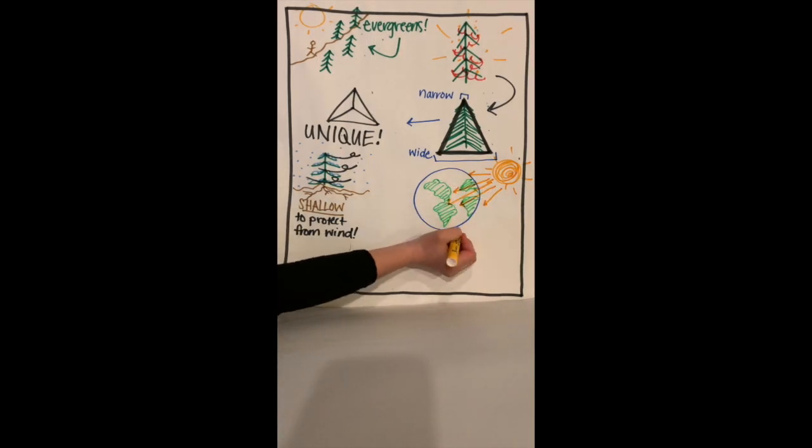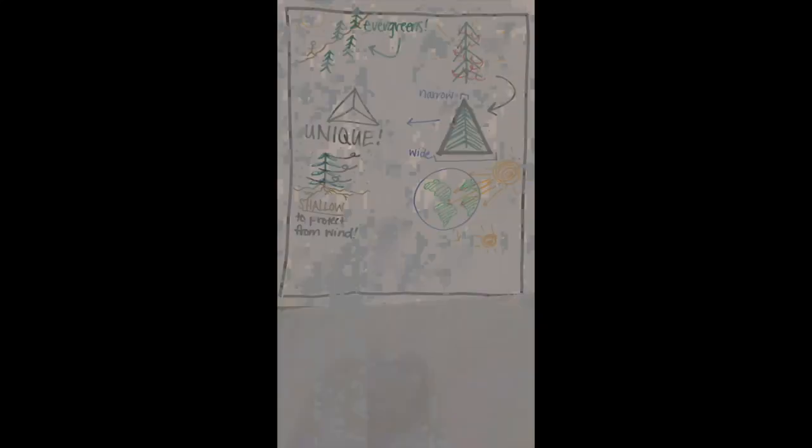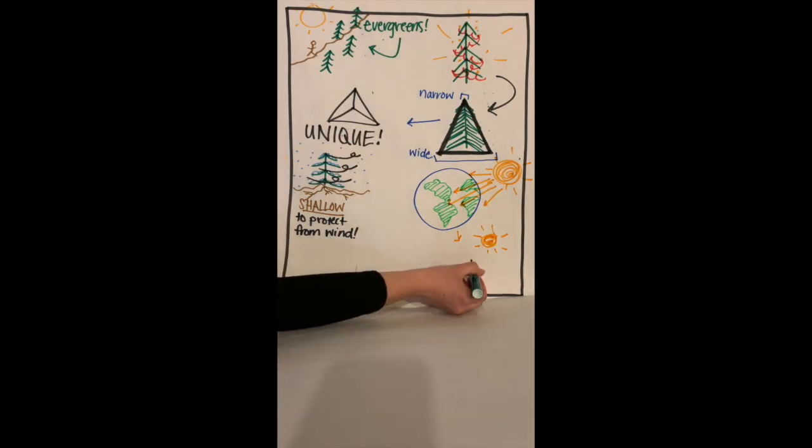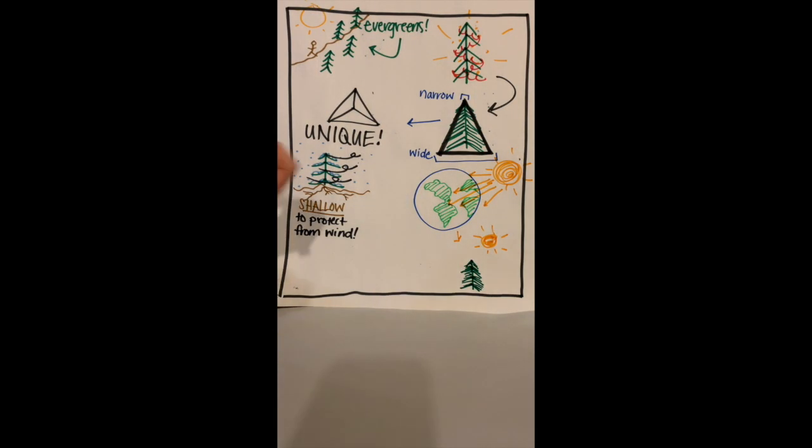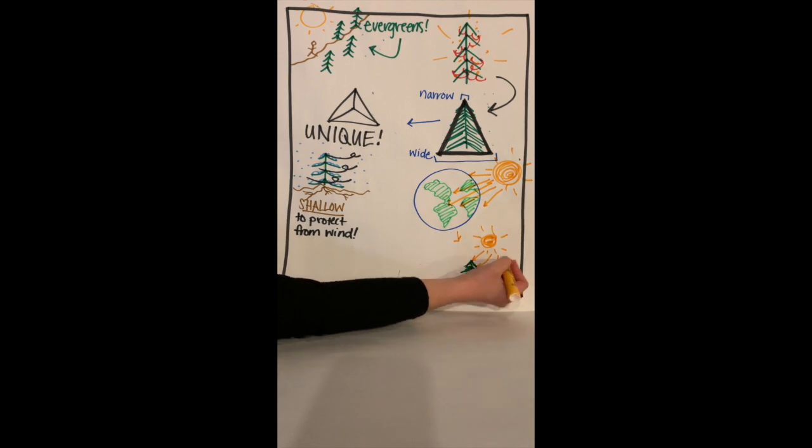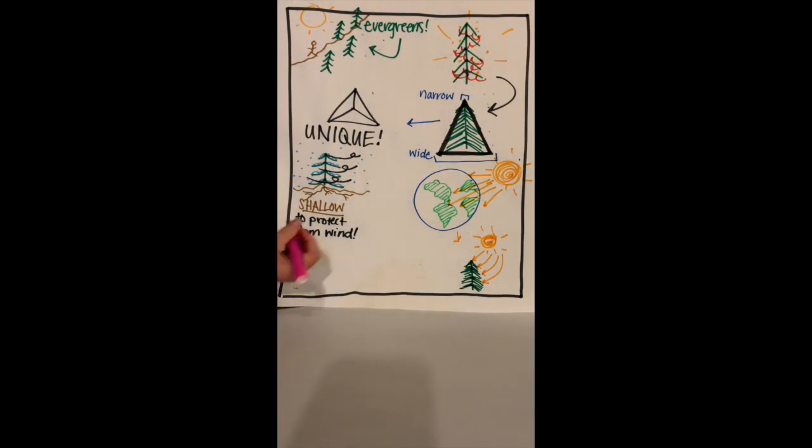The farther north you travel from the equator, the lower the angle is at which the sun's rays reach Earth. Evergreens rely on sunlight year-round to fuel photosynthesis. Their pyramidal shape allows all their branches to receive more sunlight, since the upper branches don't shade the bottom branches. Isn't nature wonderful?